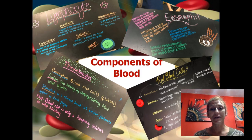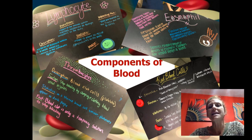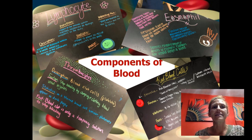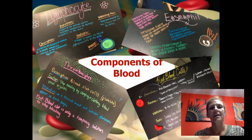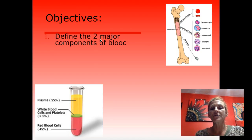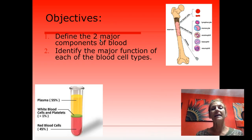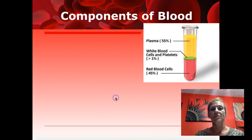Blood is a pretty important tissue, so there is much to learn about it. We are going to start by talking about components of blood. The components of blood allow blood to do its job, which is to transport nutrients, temperature regulation, and chemical messengers. For each of the components, you should be able to recognize them by picture, description, characteristic, and function.